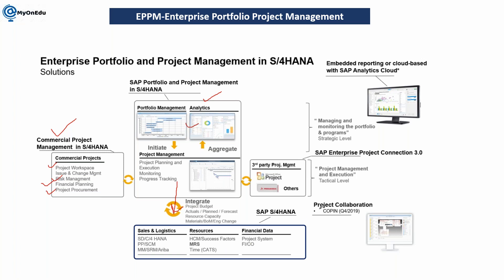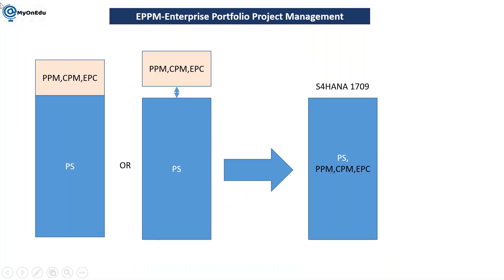All core modules are integrated, and EPC — enterprise project connector — is used to integrate with MSP and Primavera. Before S4 HANA 1709, all four modules — PPM, CPM, EPC, and PS — existed, but project system was part of the core while PPM, CPM, and EPC had a provision to integrate with the PS core ECC system either as an add-on or as an individual server.